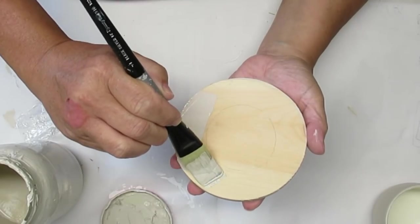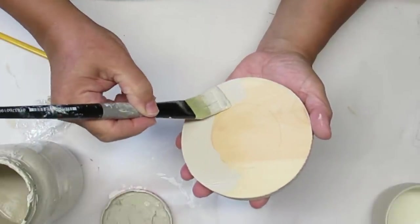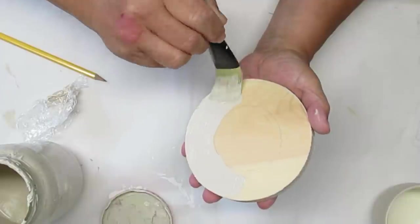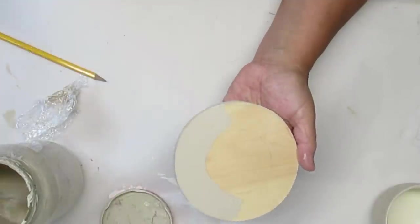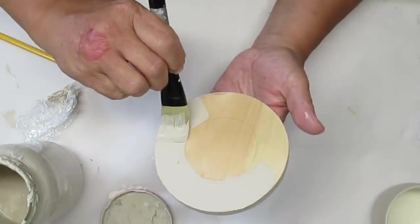I've traced out the circle where the glass candlestick is going to fit and this is going to be twofold. What it's going to do is allow me to make sure that I have it centered when I glue it down but it's also going to allow me to have contact with raw surfaces.